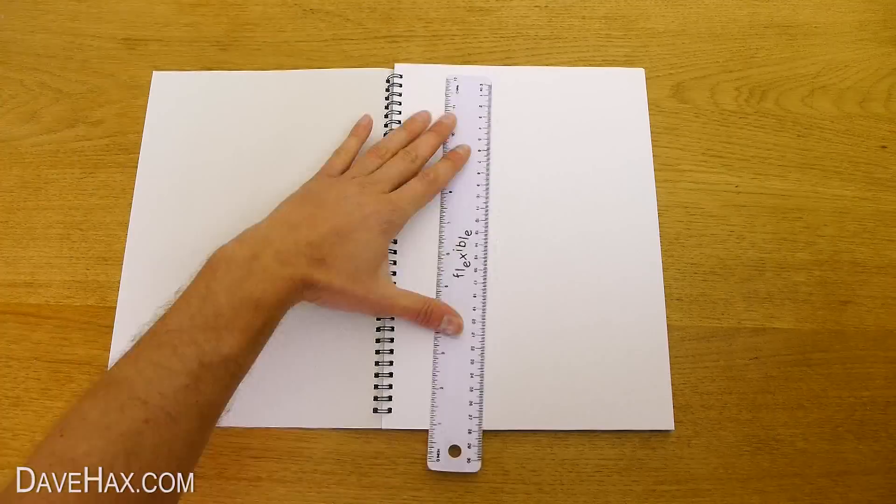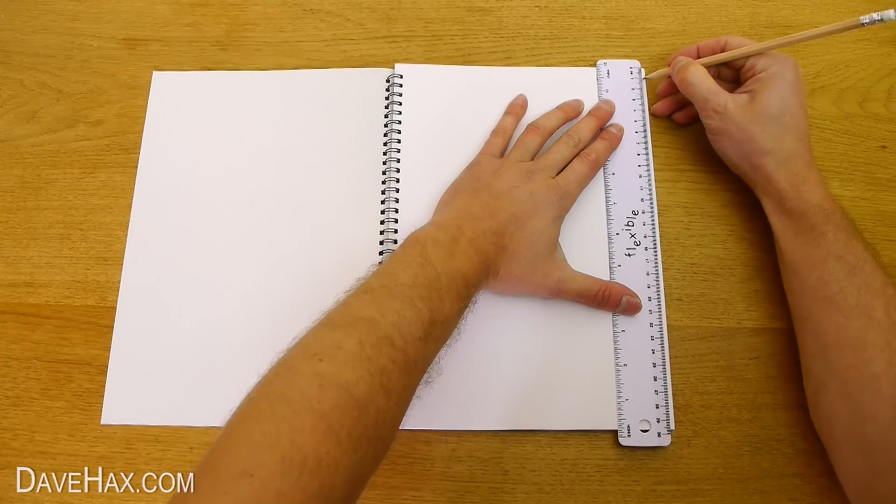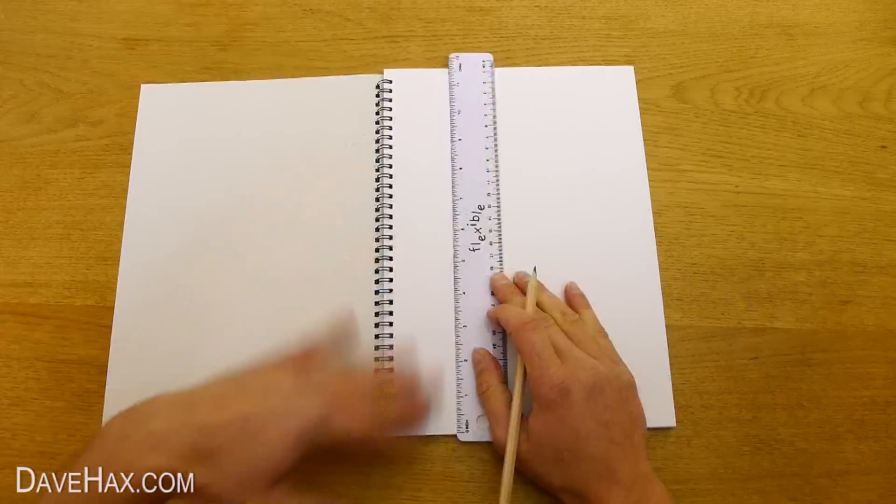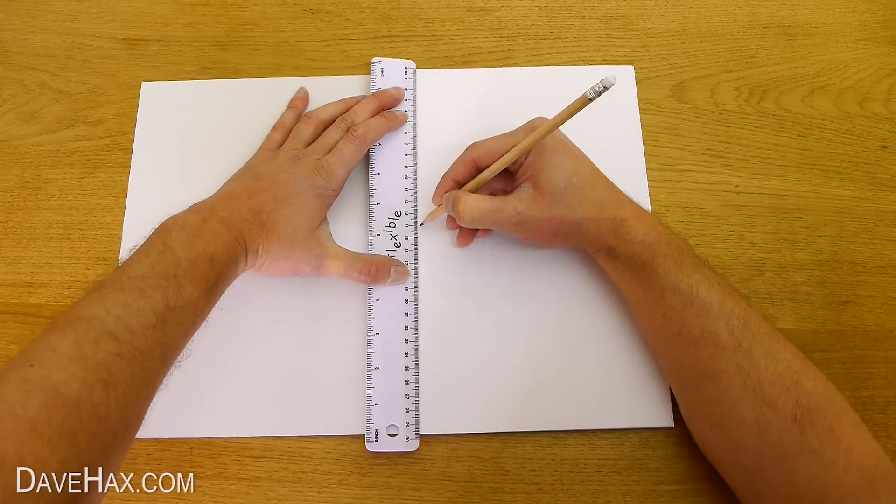Start by taking a piece of paper and using a ruler and a pencil, put a dot all the way down the side of the paper at regular intervals. I'm doing one every centimetre. When you're done, do the same down the other side.